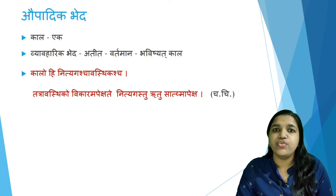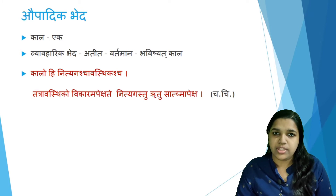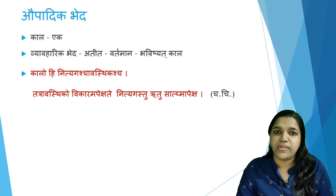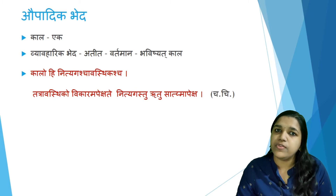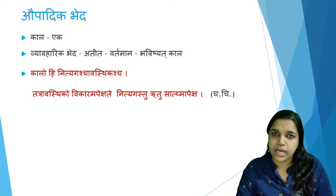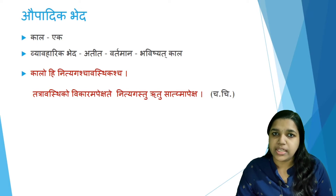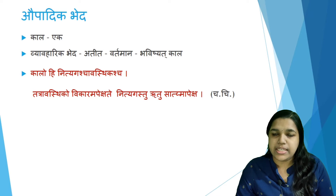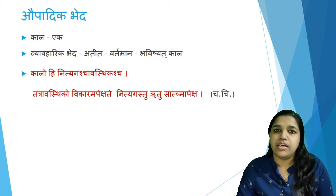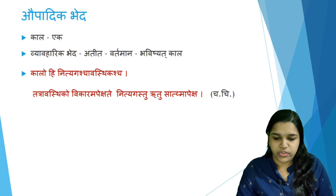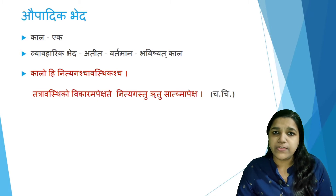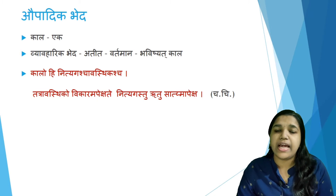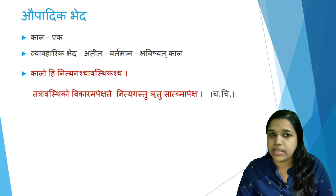Such Avastas can be considered as Avastika Kala. Nityaga Kala refers to Ritu Satmya Peksa — that is regarding Ritu, Masa, Ayana. Such Kalas are considered as Nityaga Kala. So Kala can be classified into Nityaga and Avastika: Nityaga is the Ritu-related Kala, and Avastika refers to the Kala related to disease manifestation — the stages of diseases.